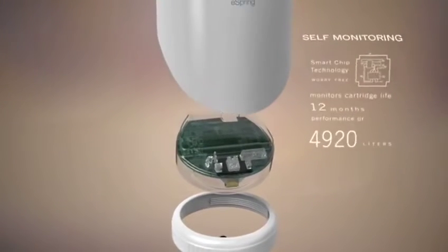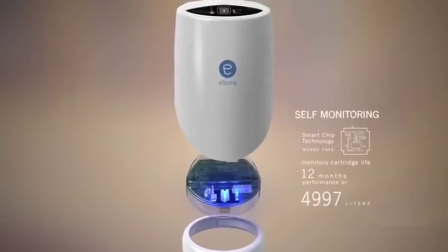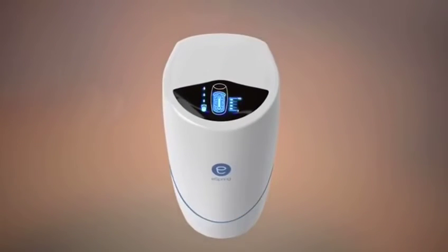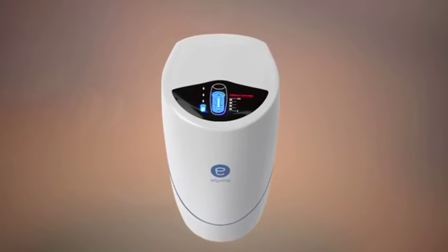It shows you how much water you've used, the life of the cartridge, and even alerts you when it's time to replace the cartridge. What we do to test for contaminant reduction claims is make sure that we're testing under extremely rigorous conditions.